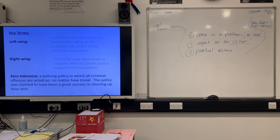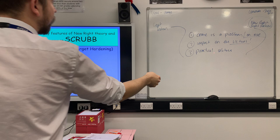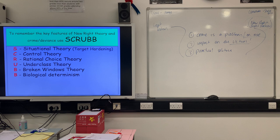So we've looked at left versus right and we've got our three things that unite all our realists. Now we need to look at the thing on the bottom page, which is SCRUB — a way to remember the new right theory, written next to Margaret Thatcher. SCRUB relates to what we are going to be looking at today: the different solutions or different theories that might explain crime. You've got Situational theory, Control theory, Rational choice, Underclass theory, Broken windows theory, and Biological determinism. All of those will have a place in today's lesson.